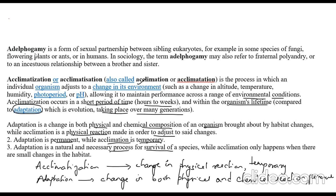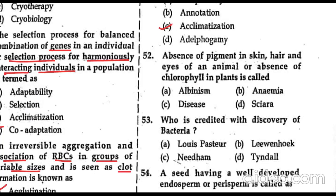Adelphogamy is a sexual partnership between sibling eukaryotes, mainly seen in some species of fungi, flowering plants, ants, or humans — it may refer to fraternal polyandry or an incestuous relationship between brother and sister. Question 52: absence of pigment in skin, hair, and eyes of an animal, or absence of chlorophyll in plants, is known as albinism.